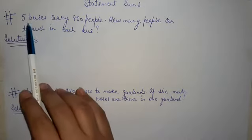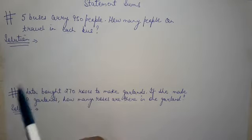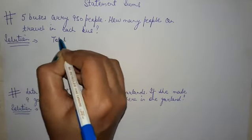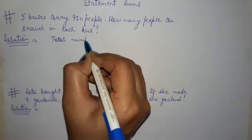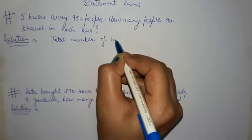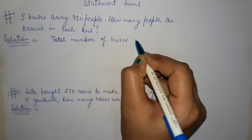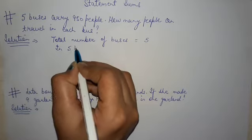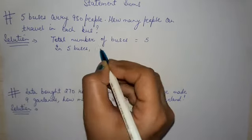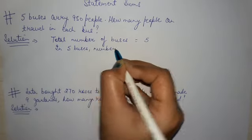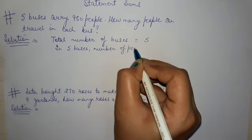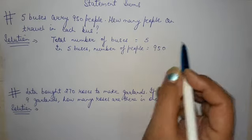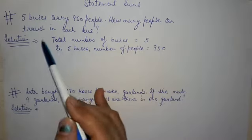First, let's write the given information. Five buses carry 950 people. You can write here: total number of buses equals to 5, in 5 buses number of people equals to 950. We need to find how many people can travel in each bus.